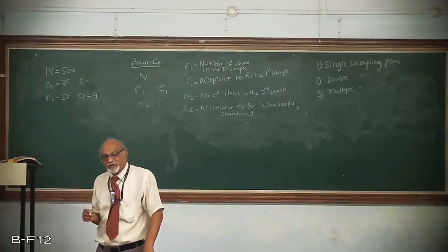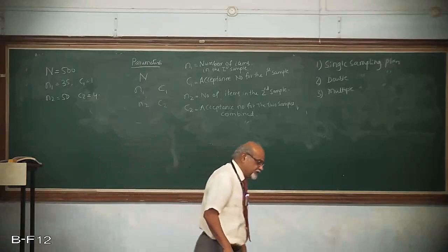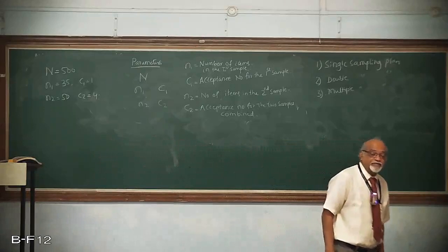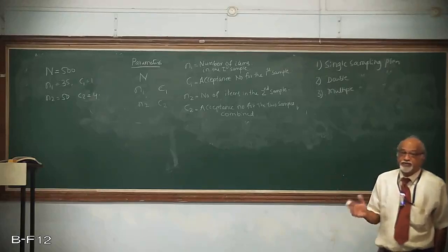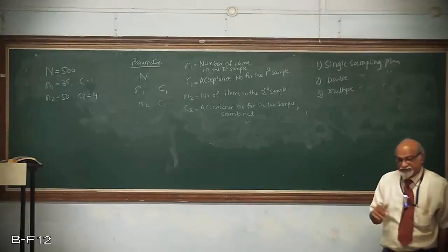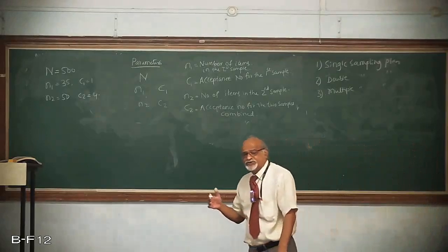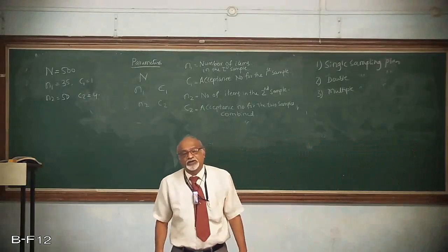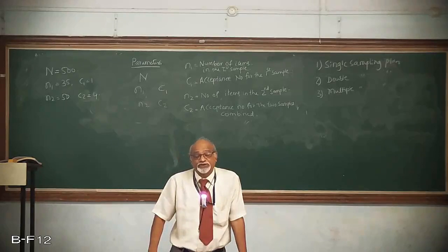This is about the double sampling plan. Logically, we can extend the same thing for multiple sampling plan, which means more than two samples will be taken — three, four, five, and so on. Each of these has combined acceptance numbers C1, C2, C3, C4, C5 — all combined numbers.